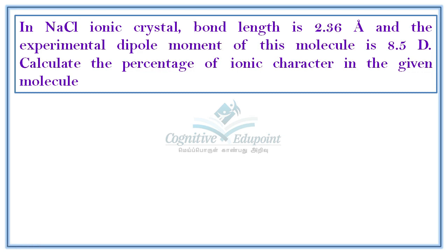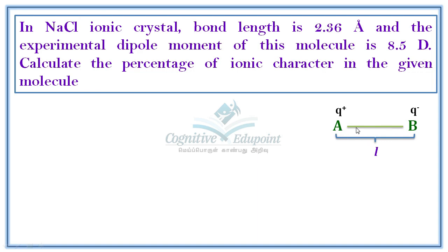Here is a small introduction about dipole moment. When we have an ionic compound that is completely 100% ionic, it is full of cations and anions — positive and negative charges — separated by the bond length. Dipole moment measures the separation of these charges. It is the product of charge multiplied by the distance between the charges.